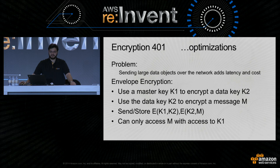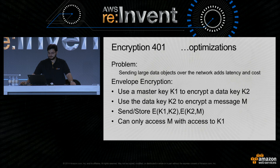Sending large objects over a network is expensive — it adds latency — and often you'll want to instead use something called envelope encryption, where you send off a key to be encrypted and then locally encrypt bulk data with that key. The overall idea is you use a master key K1 to encrypt a data key K2. You then store the data key encrypted with the master key and the ciphertext encrypted with the data key. Someone with that pair of values can access the message by first decrypting the data key and then using the data key to decrypt the message.